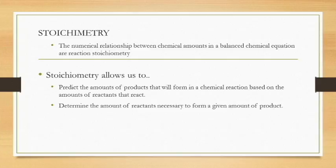The numerical relationships between chemical amounts in a balanced chemical equation are called reaction stoichiometry. Stoichiometry allows us to predict the amounts of products that will form in a chemical reaction based on the amounts of reactants that react.